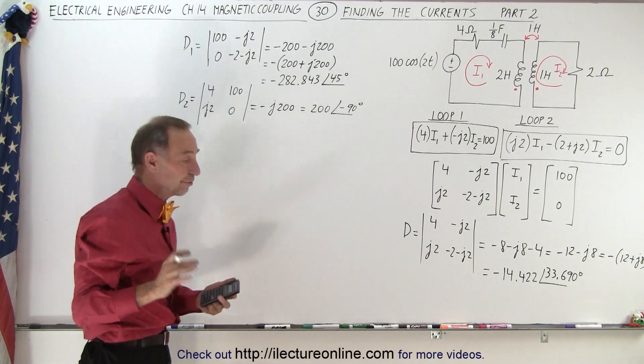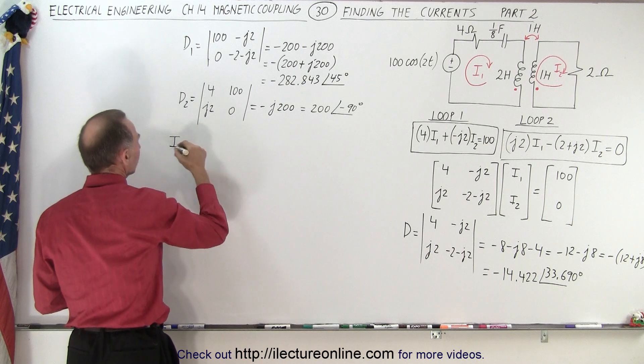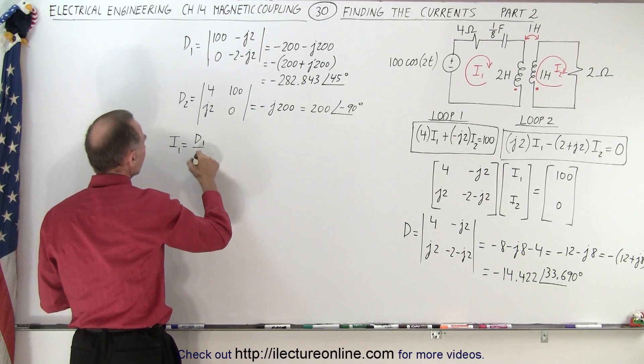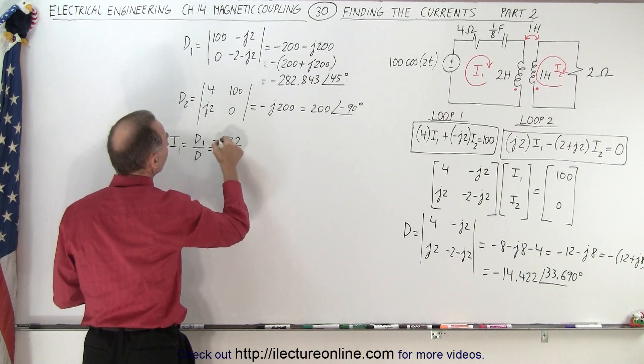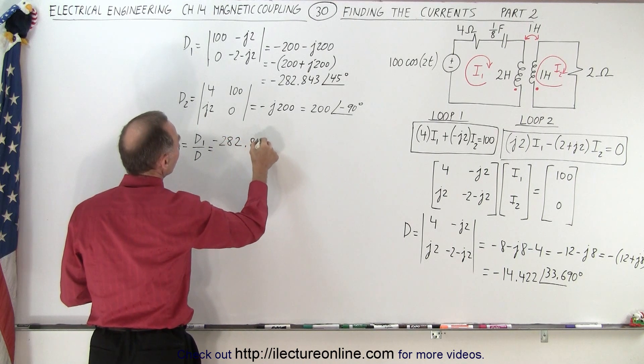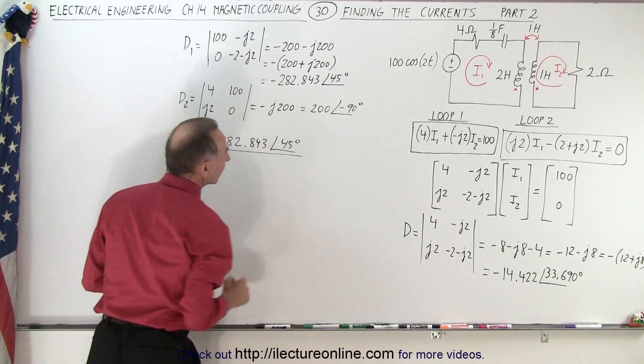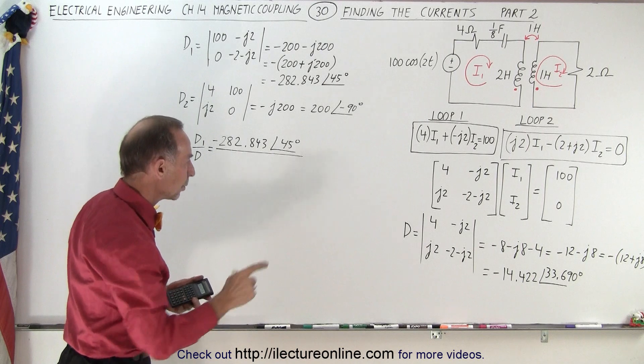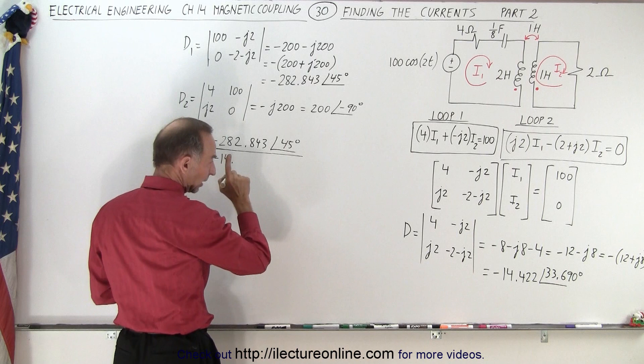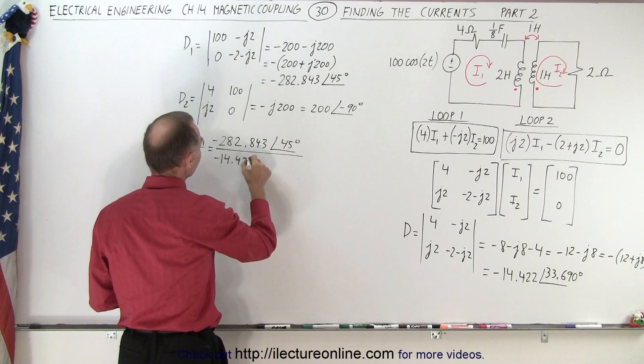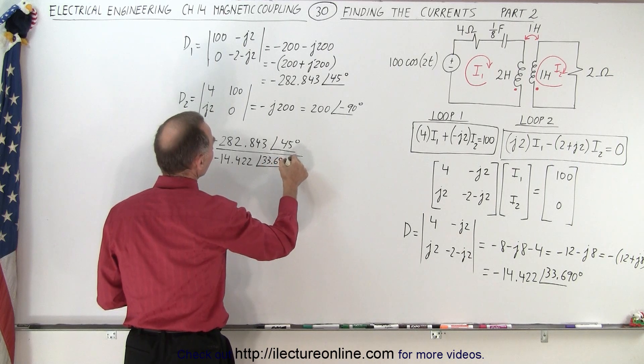Now I'm ready to find the currents. Because I1 is equal to the ratio of D1 over D. D1 is minus 282.843 with a phase angle of 45 degrees, divided by D, which is negative 14.422 with a phase angle of 33.690 degrees.